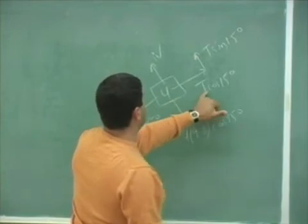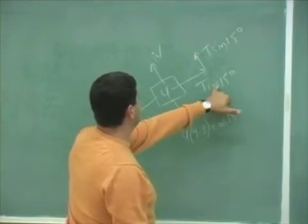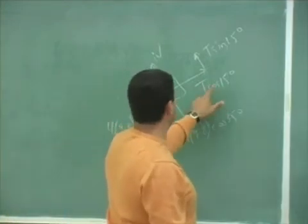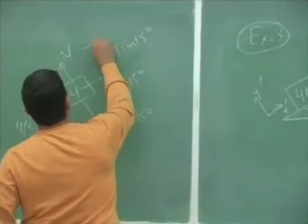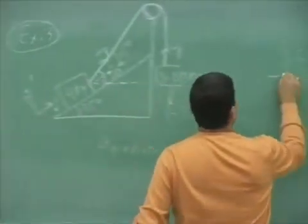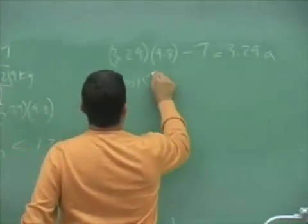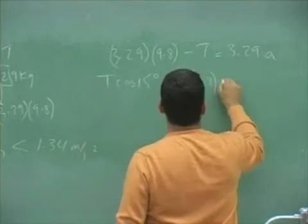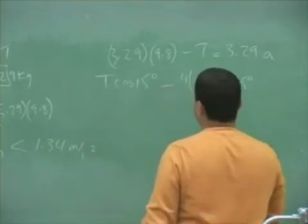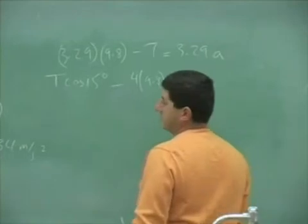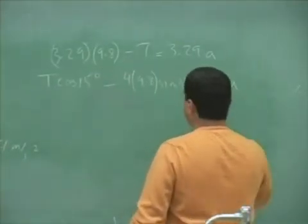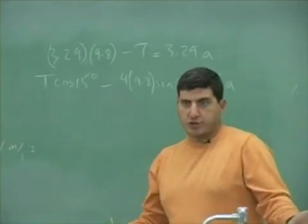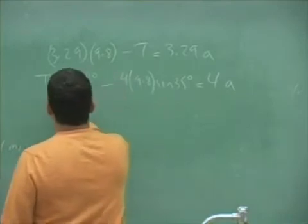So now what needs to happen is T cos 15 needs to beat 4 times 9.8 times sine 35. So this one is going to accelerate this way. So T cos 15 minus 4 times 9.8 times sine 35 equals 4a.